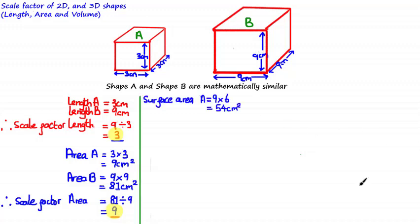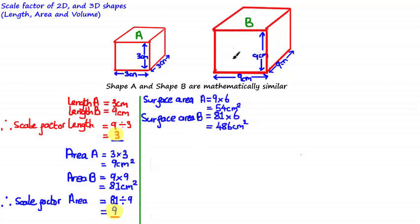The surface area of cube A equals 9 times 6 — since the area of one face is 9cm² and there are 6 faces — giving 54cm². The surface area of cube B equals 81 times 6, since each face is 81cm², giving 486cm². To calculate the scale factor of surface area, we divide the larger area by the smaller: 486 divided by 54 gives a scale factor of surface area equal to 9.